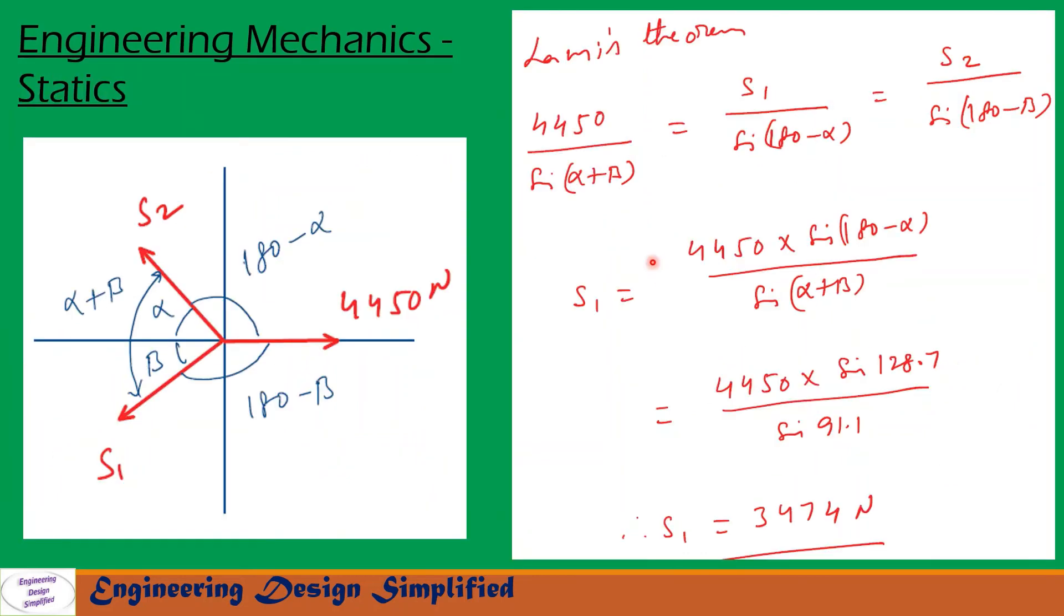Now let us write Lamy's theorem. Lamy's theorem is 4450 by sin(alpha plus beta) equals S1 by sin(180 minus alpha), that is also equal to S2 by sin(180 minus beta), that is written here.